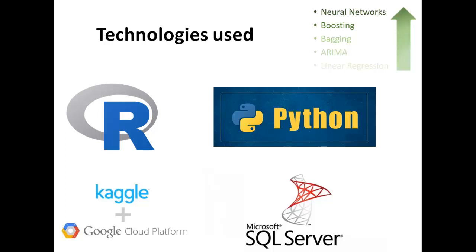We also used the Google Cloud Platform and merged that with some datasets from Kaggle, and tested some of those with R and Python. In this presentation, I will briefly introduce some of the models we developed: regression, ARIMA, bagging and boosting, and neural networks.